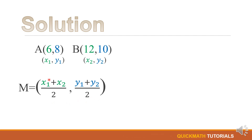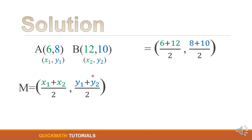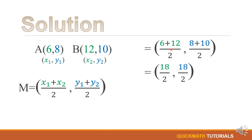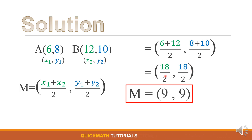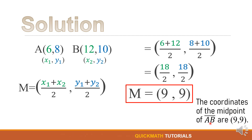we will substitute the values of x sub 1, y sub 1, x sub 2, and y sub 2. So, we have here our x sub 1 is equal to 6, x sub 2 is equal to 12, our y sub 1 is equal to 8, and our y sub 2 is equal to 10. 6 plus 12 equals 18, 8 plus 10 equals 18. 18 divided by 2, we have 9, and 18 divided by 2, we have 9. Therefore, the coordinates of the midpoint of the line segment AB are 9 and 9.